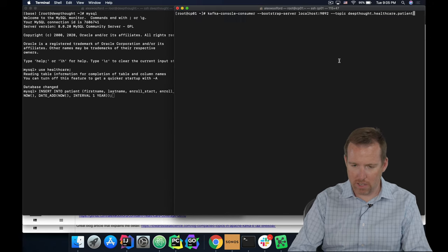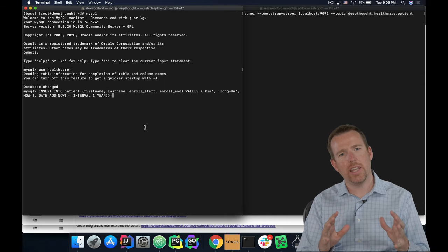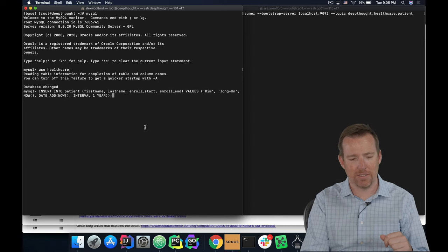I'm going to open a console consumer. And I want you to see that you can insert the record in one place, and it instantly shows up in Kafka.